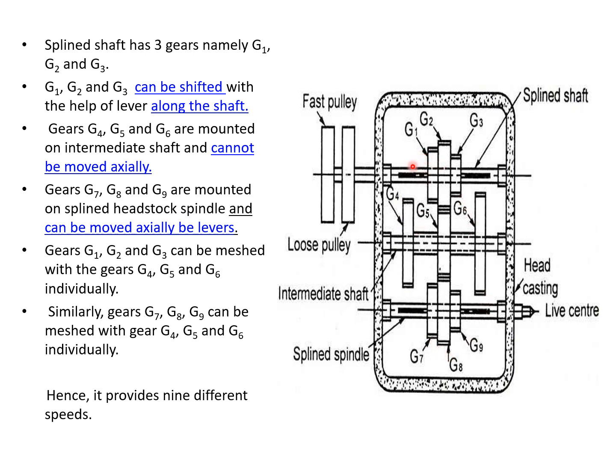That is, in the splined shaft, three gears are there. Intermediate shaft, three gears are there. Splined spindle, three gears are there. So, totally, nine gears are available in this headstock mechanism. So, we can be able to achieve nine different speeds.